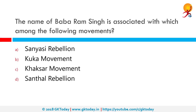The name of Baba Ram Singh is associated with which among the following movements? The correct answer is the Kuka movement. The Kuka movement marked the first major reaction of the people in the Punjab region to the new political order initiated by the British after 1849. The Namdhari movement, of which the Kuka movement was the most important phase, aimed at overthrowing British rule.